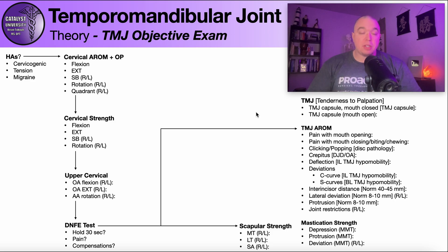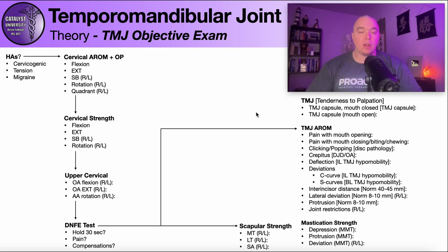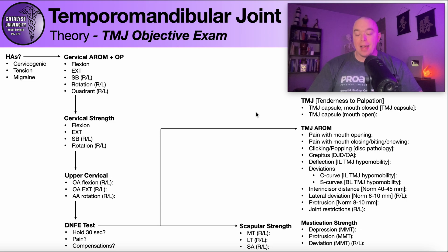With any TMD case, we always start with the neck — the cervical objective exam. The idea behind this is we want to potentially rule out the neck as directly causing their TMJ pain or whatever dysfunction it is. When I say directly causing it, I mean any neck test — range of motion, strength — if it reproduces their familiar jaw pain, then the neck is directly involved, and you would actually treat this more as a neck case than a TMD case.